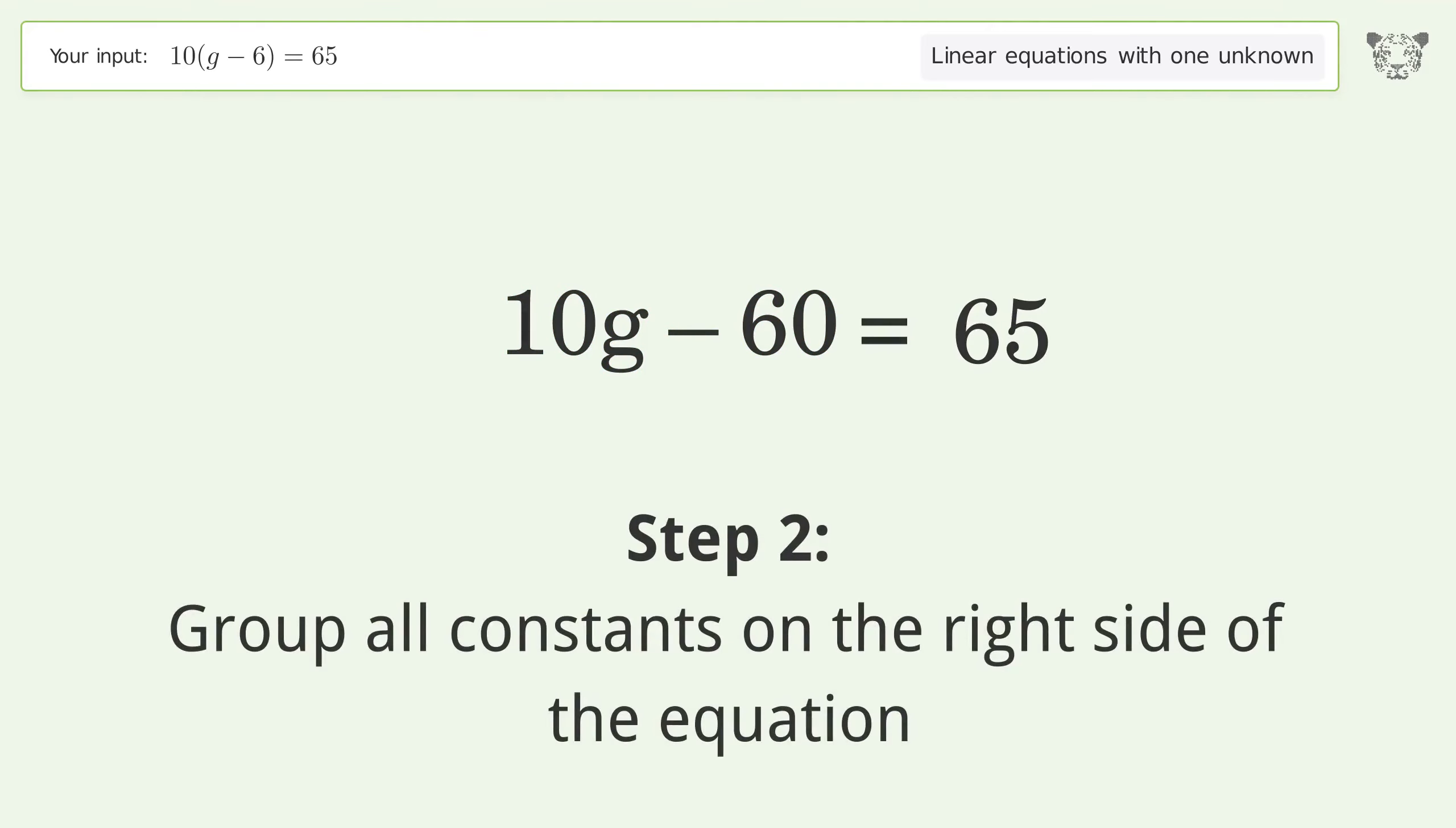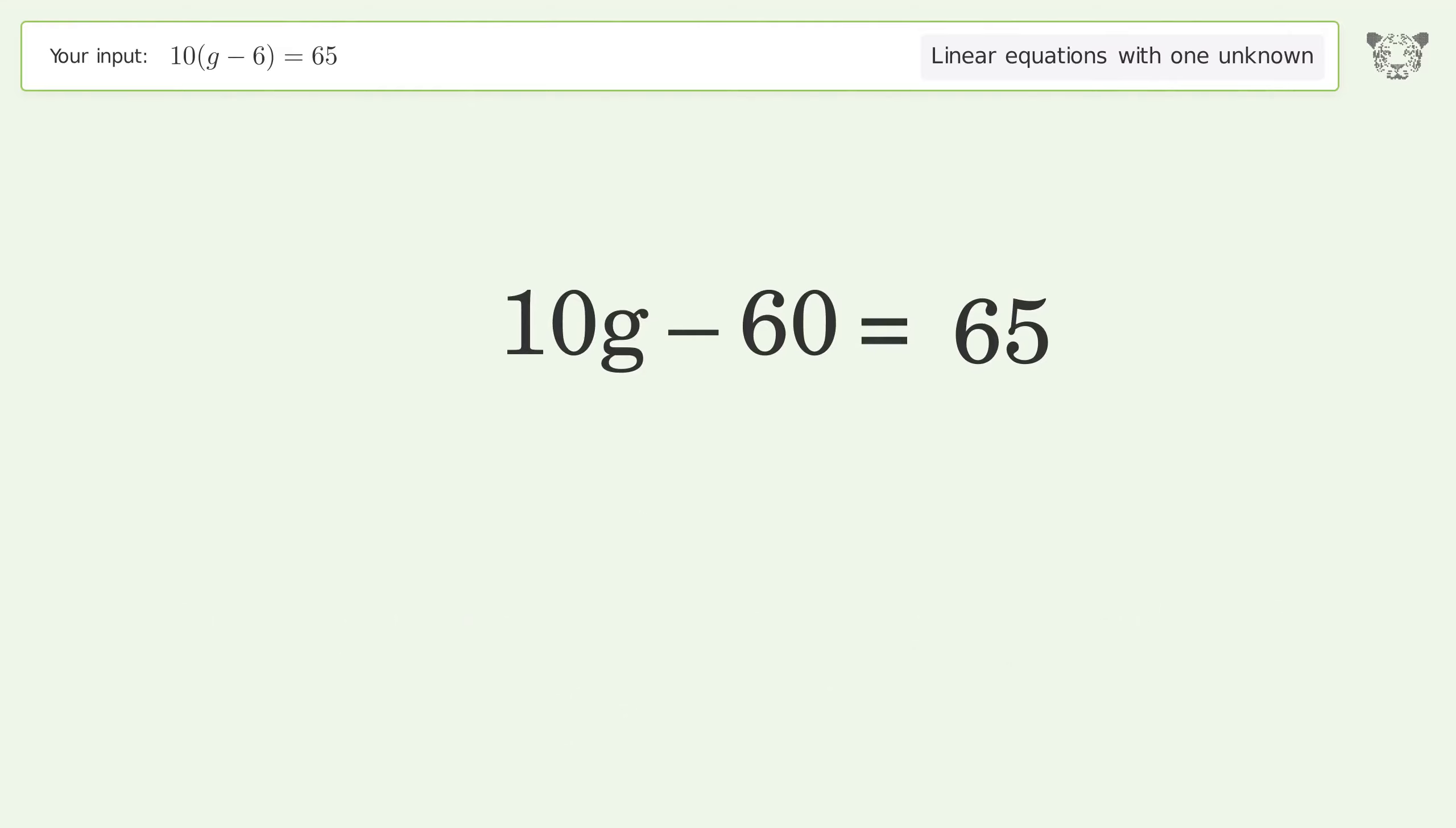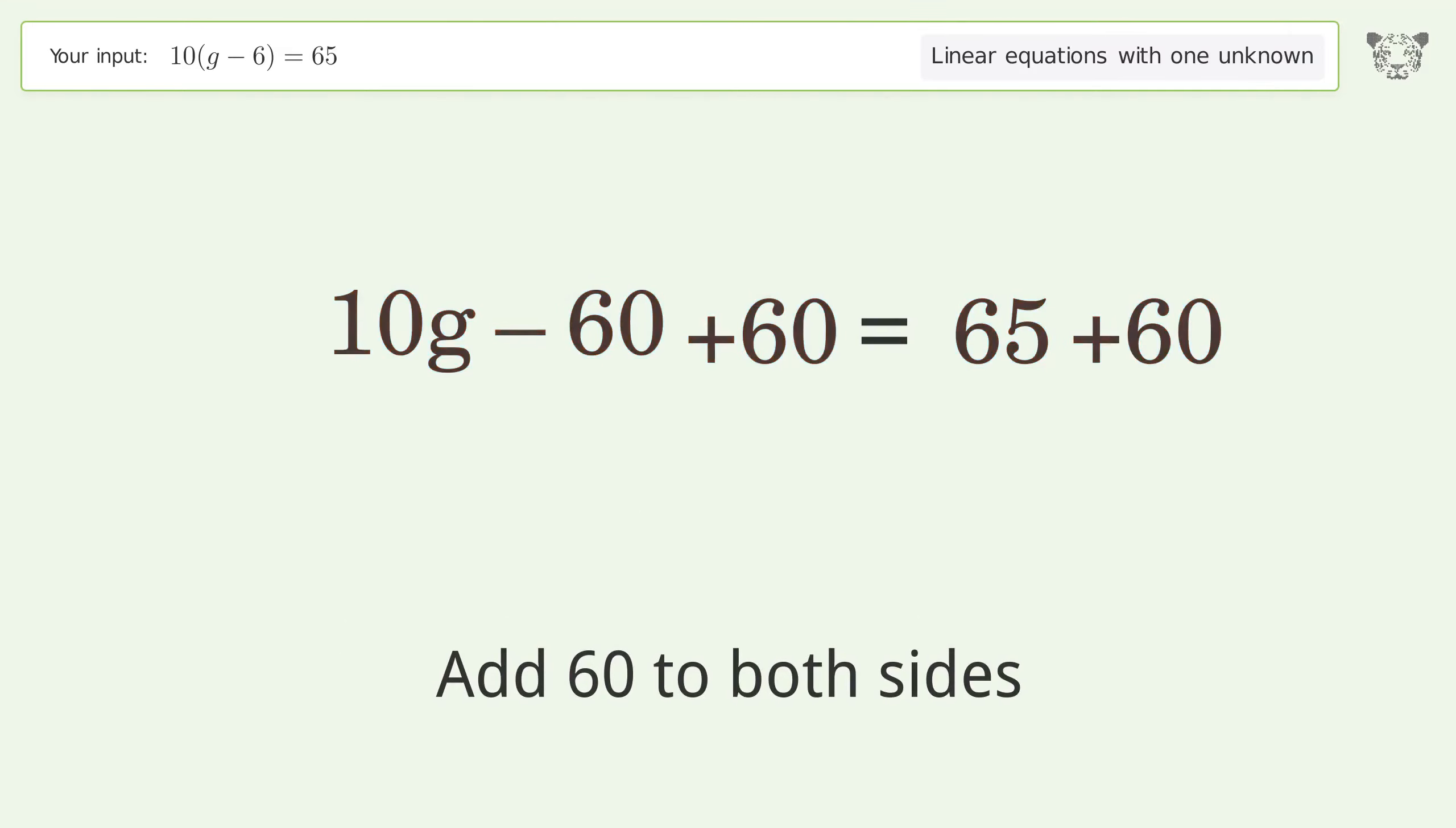Group all constants on the right side of the equation. Add 60 to both sides. Simplify the arithmetic.